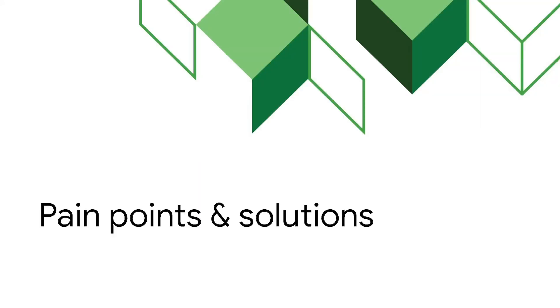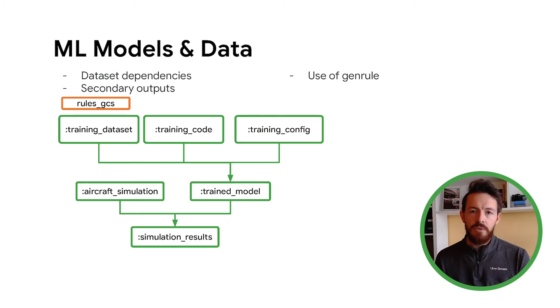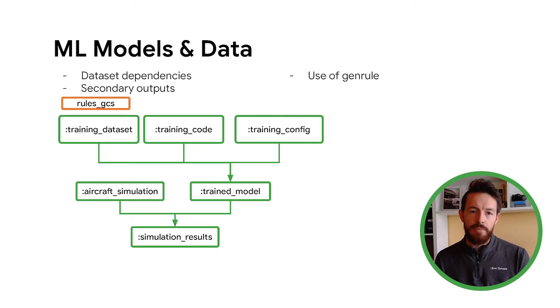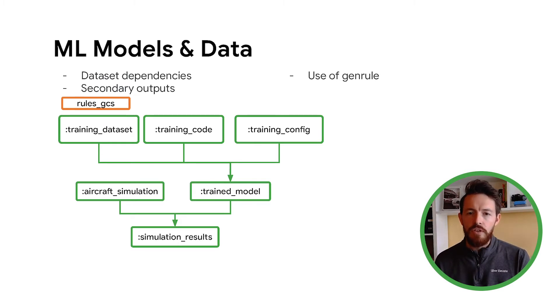Now let's talk about pain points. The first use case is machine learning — how do we represent ML models as a Bazel graph? A trained model has three types of dependencies: the data set, the training code (usually Python in our case), and a training configuration representable as a YAML file. The nice thing about representing this as a Bazel target is that you can reuse it as an input to a downstream research experiment, such as using a trained model in an aircraft simulation to build downstream research results. You can easily do this using a genrule.